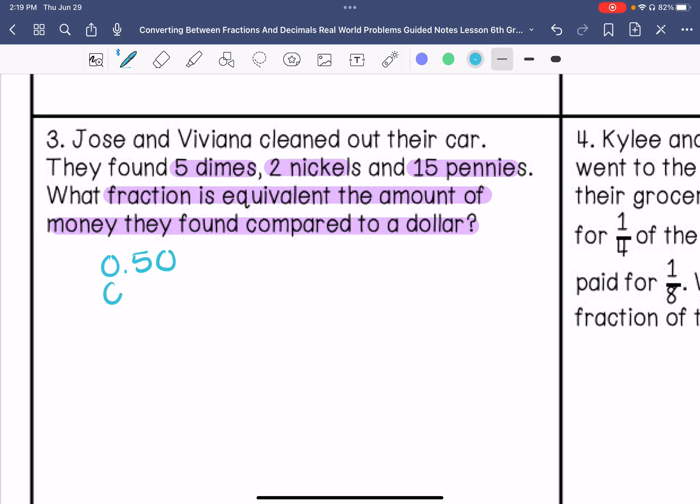Two nickels is five cents a piece, so that would be ten cents and fifteen pennies, one cent a piece. So we are going to add those up. Okay, and then we are going to change that to a fraction. So that is seventy-five hundredths. We are going to simplify. If we divide each by twenty-five, we get three-fourths.